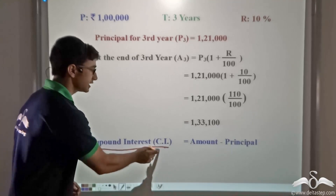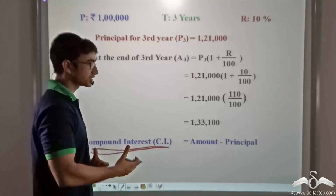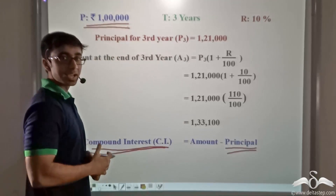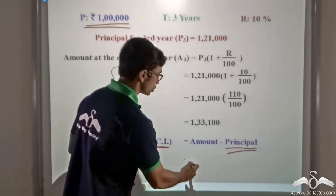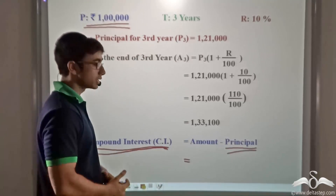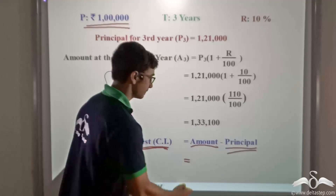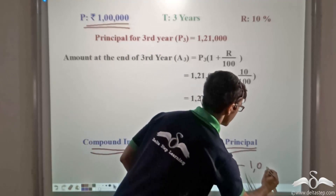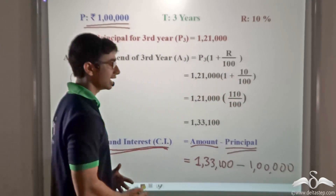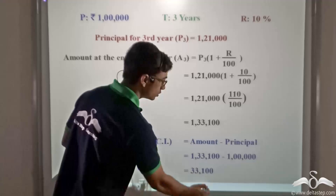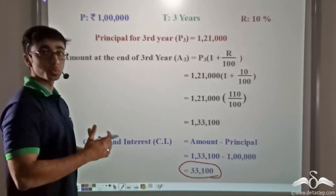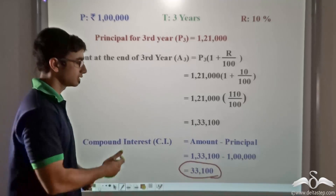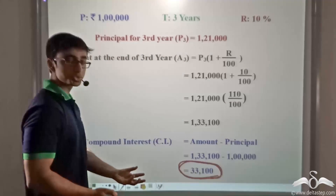Now I am interested to find the compound interest — that is, the amount by which his original invested money has grown. The original invested money was Rs 1 lakh. Compound interest is nothing but the final amount that Sudhir is getting back, which is 1 lakh 33,100 rupees, minus the principal. So that equals 33,100 rupees. Instead of keeping his money in a safe, by depositing in a bank Sudhir's money grows by Rs 33,100.